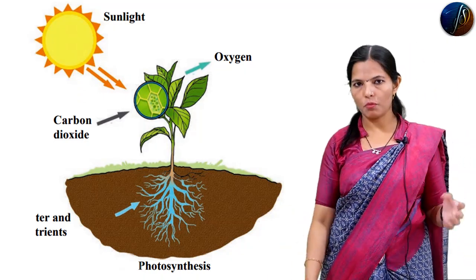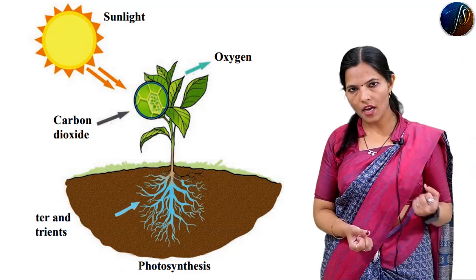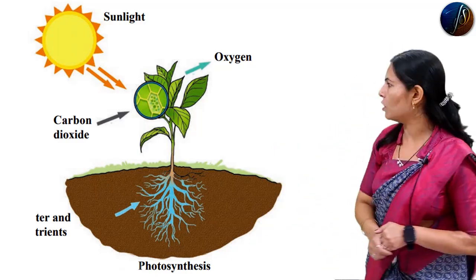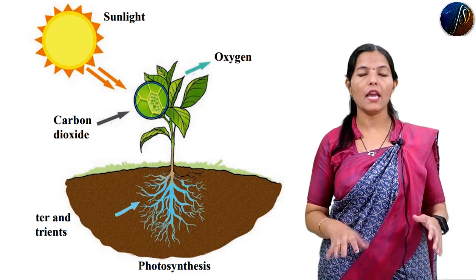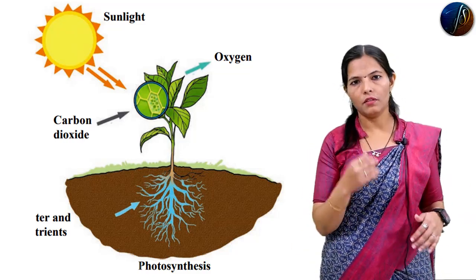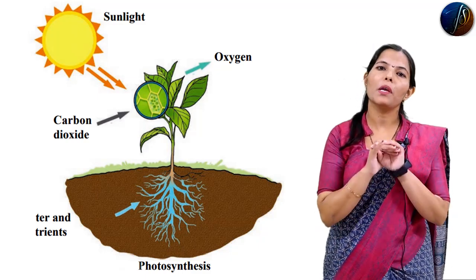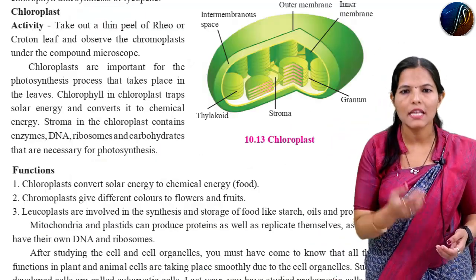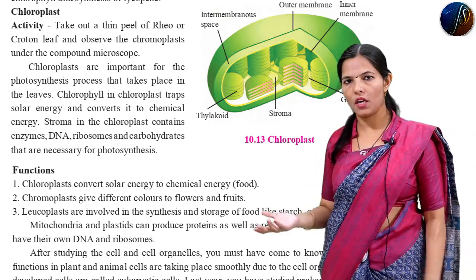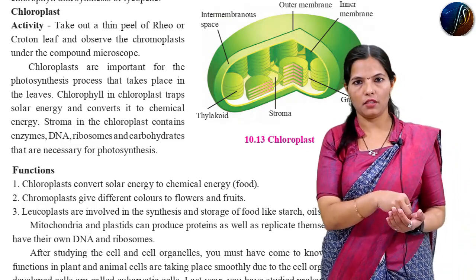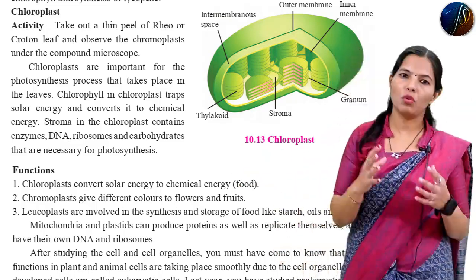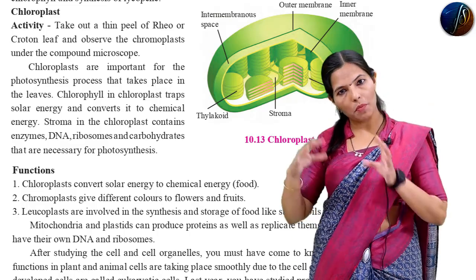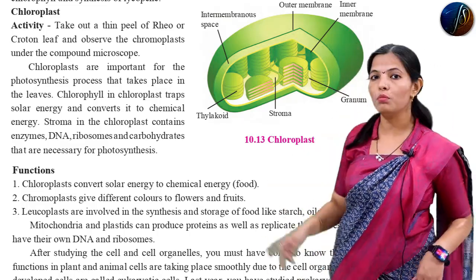Carbon dioxide and water are converted into glucose, and oxygen is released. This whole process is called photosynthesis. If chlorophyll pigment is absent, the photosynthesis process does not occur. Chlorophyll in chloroplast traps solar energy and converts it into chemical energy. The solar energy is converted into chemical energy.